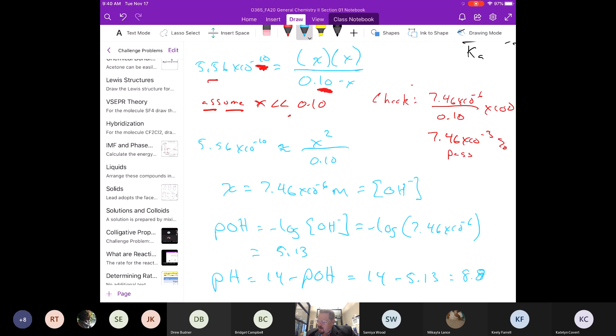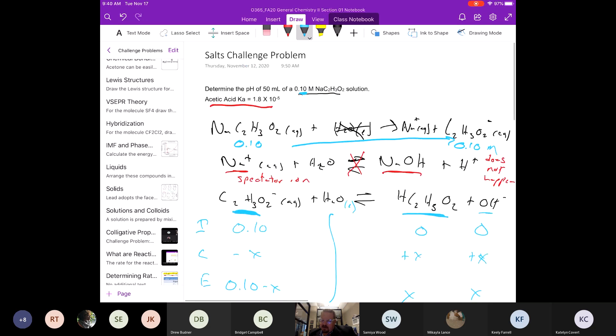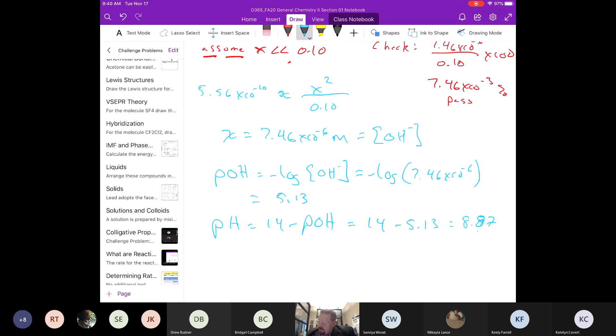If we look up here, this had two significant digits. So down here in pH, this one also has to have two significant digits, which means two decimal places.